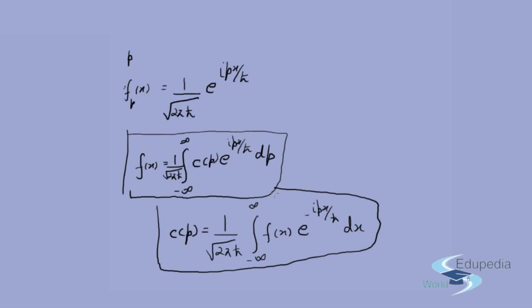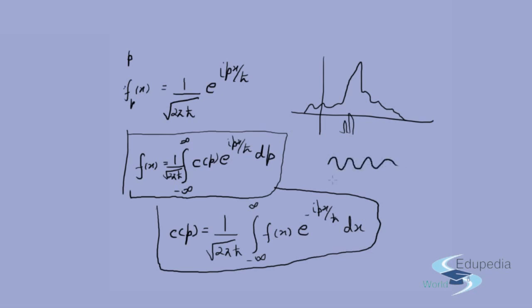In summary, both the position and momentum operators, being Hermitian, have real eigenvalues and complete eigenfunctions satisfying Dirac orthonormality. In position space any state is a superposition of localized delta functions; in momentum space any state is a superposition of plane waves — which is essentially the content of Fourier series. In the next video we will rigorously derive the uncertainty principle, showing that a spread in position necessarily implies a spread in momentum and vice versa.